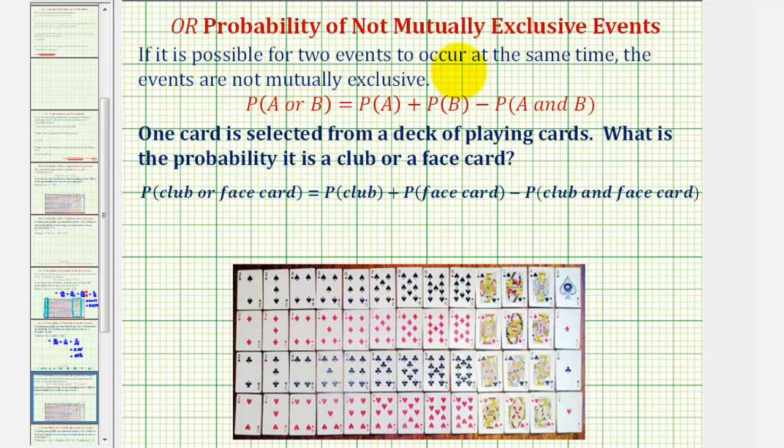If it is possible for two events to occur at the same time, the events are not mutually exclusive. So if events A and B are not mutually exclusive...